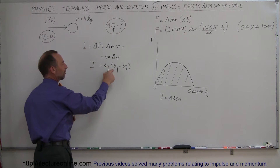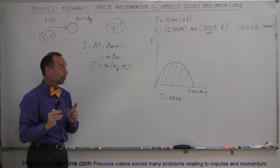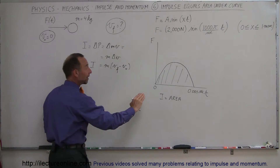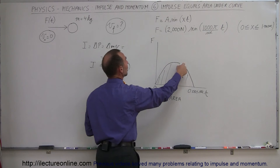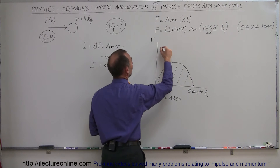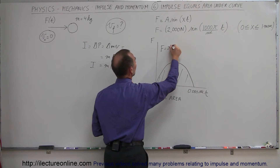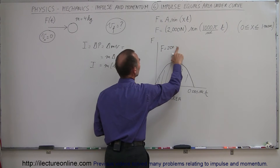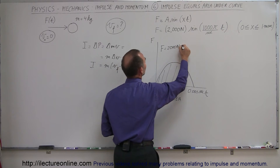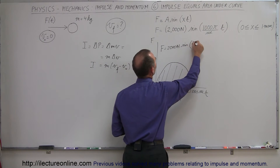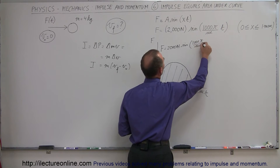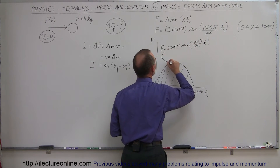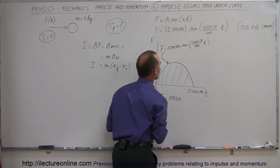We know the mass, but we need to find the impulse to find the final velocity. The impulse will be found by finding the area underneath this curve. The function here is defined as f = 2,000 newtons — not 200 newtons — 2,000 newtons times the sine of 1,000 pi per second times t, which is this function right here.